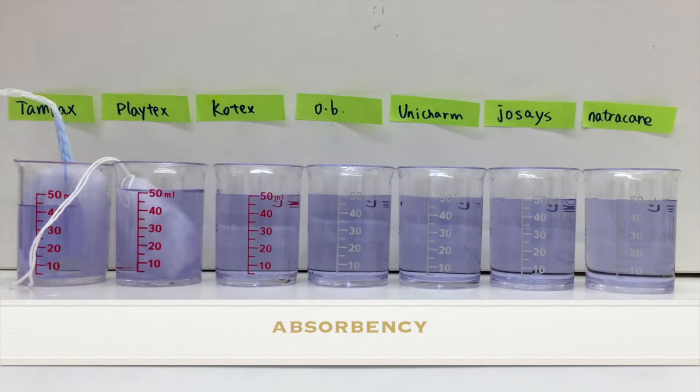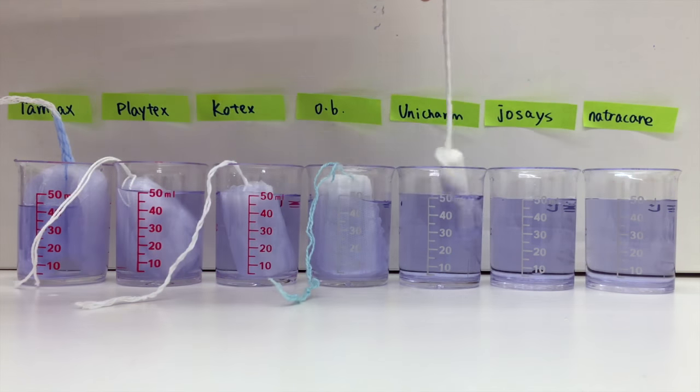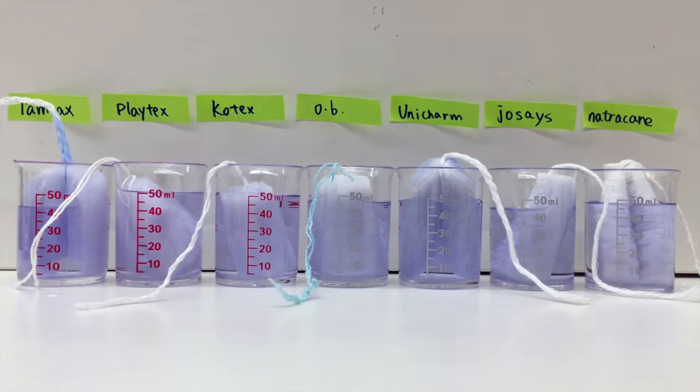First, we will prepare the 7 beakers containing 50 ml of water and put the cotton in each of them. After they absorb the water, we will pull them out and do the maths.